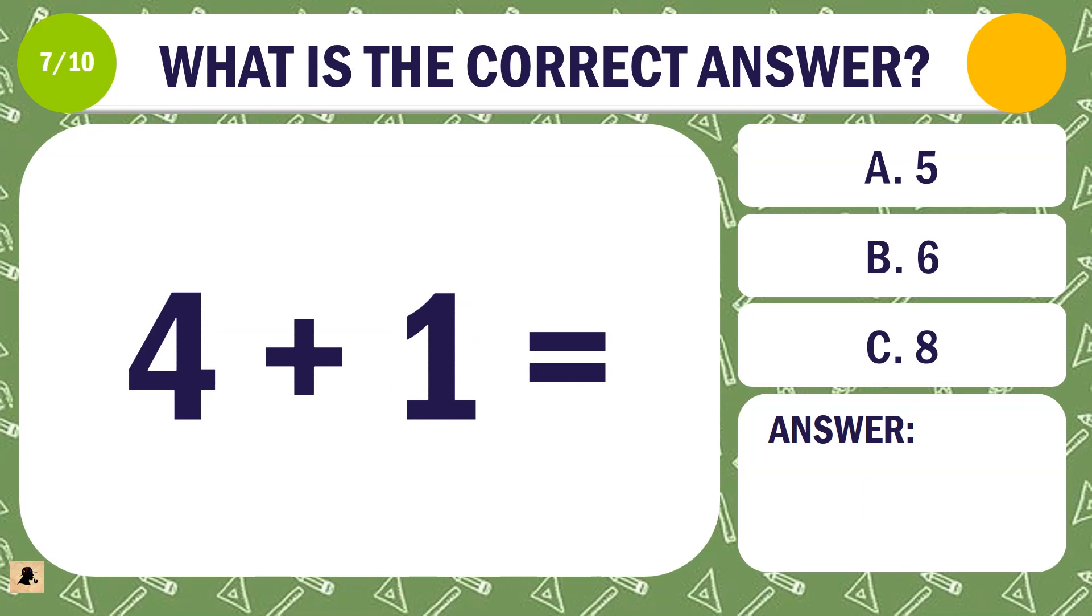Question 7. What is the correct answer for 4 plus 1? A. 5. B. 6. Or C. 10.